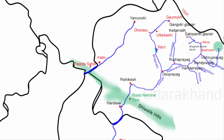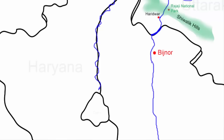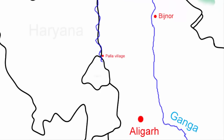Yamuna then flows along the Himachal and Uttar Pradesh border for about 5 kilometers, then enters the Indo-Gangetic plain and flows along the northwestern border of Uttar Pradesh and Haryana for about 200 kilometers. Yamuna enters Delhi at Palla village, continues along the Delhi and Uttar Pradesh border for about 15 kilometers before fully entering Delhi. From Delhi onward, Yamuna gets heavily polluted due to discharge of wastewater.